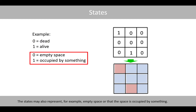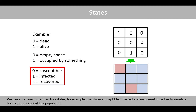The states may also represent for example empty space, or that the space is occupied by something. We can also have more than two states, for example the states susceptible, infected and recovered if we like to simulate how a virus is spread in a population.